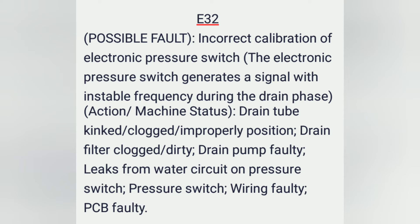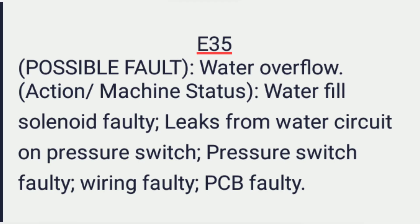E32 continued: the electronic pressure switch generates a signal with an unstable frequency during the drain phase. Action/machine status: drain tube kinked, clogged, or improperly positioned, drain filter clogged or dirty, drain pump faulty, leaks from water circuit on pressure switch, pressure switch wiring faulty, PCB faulty.